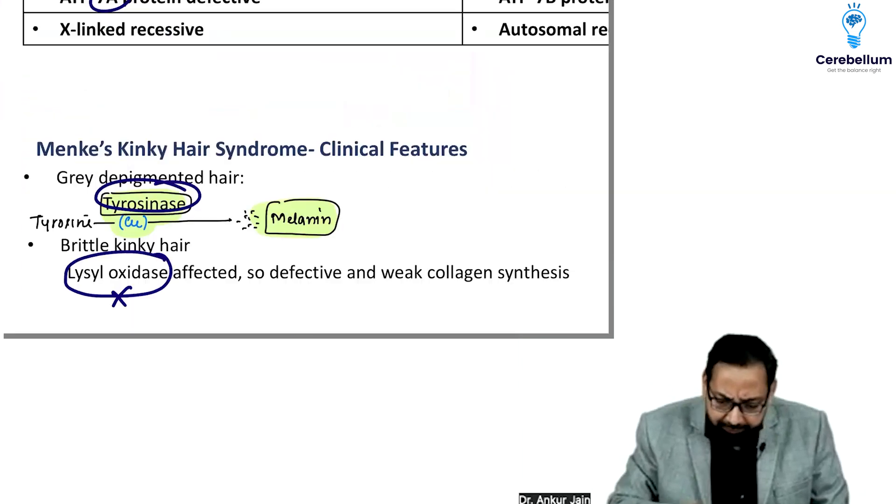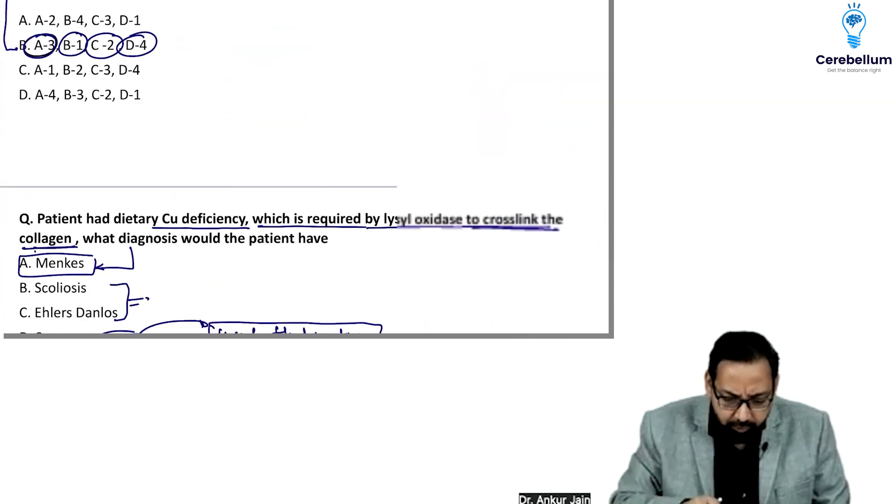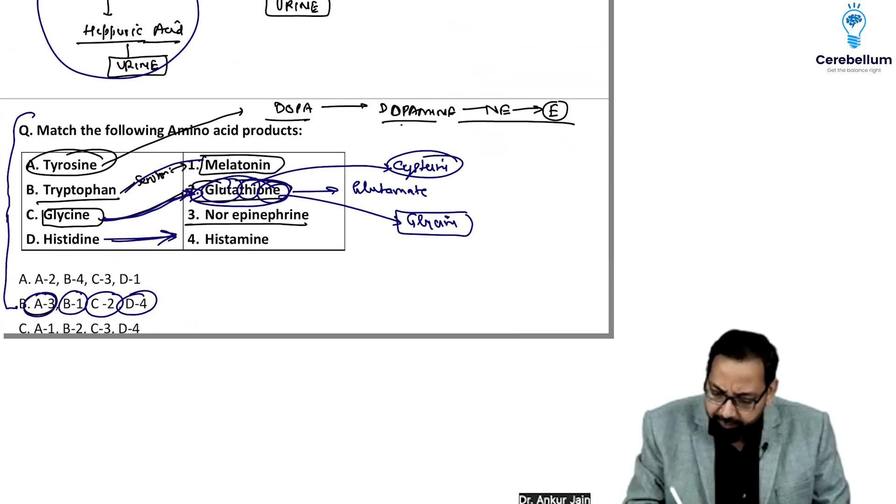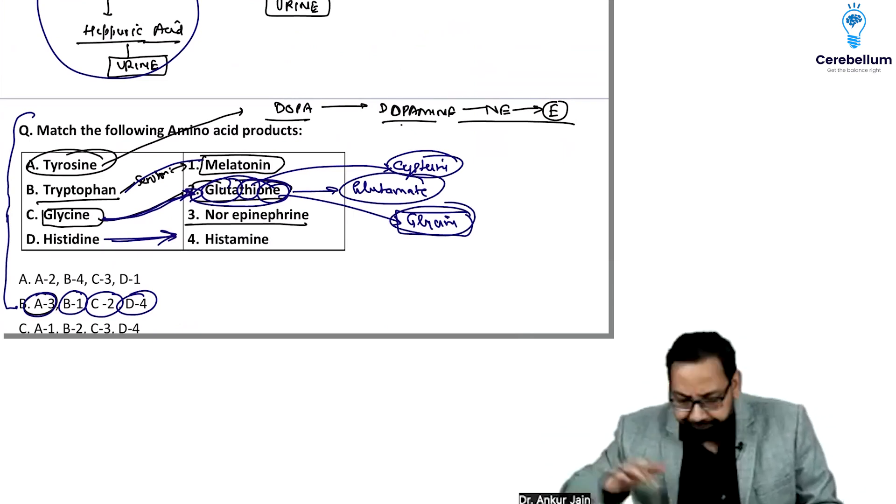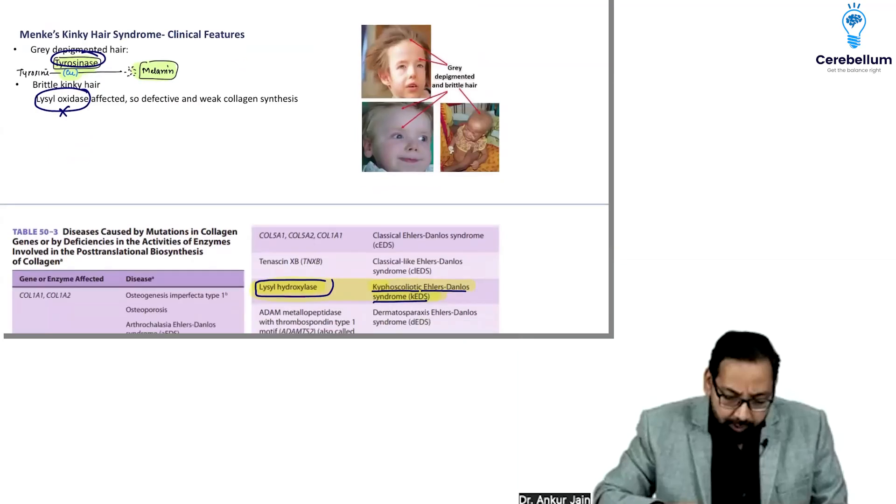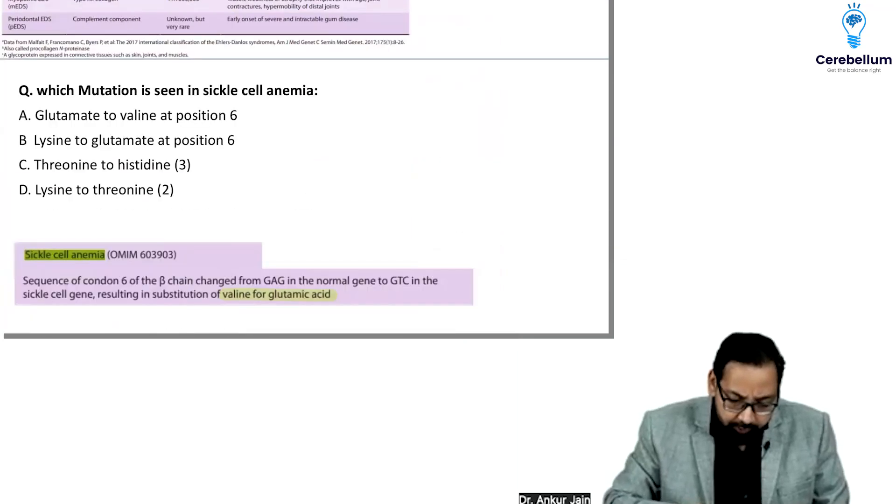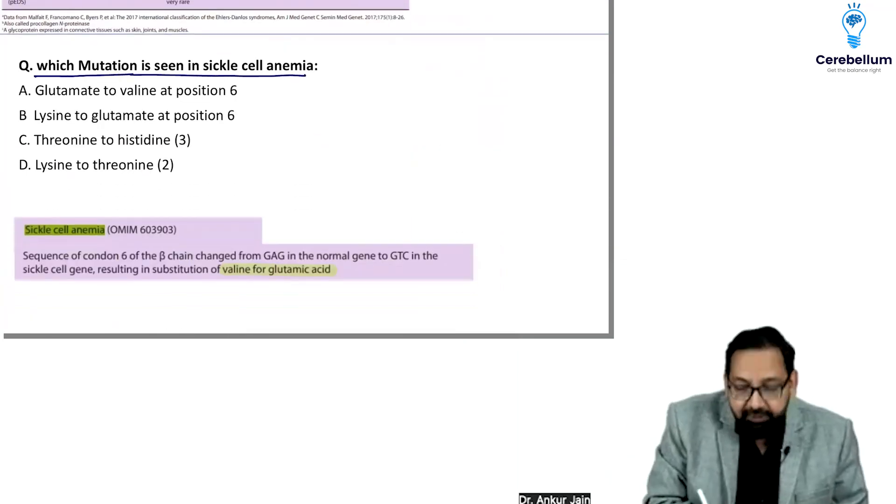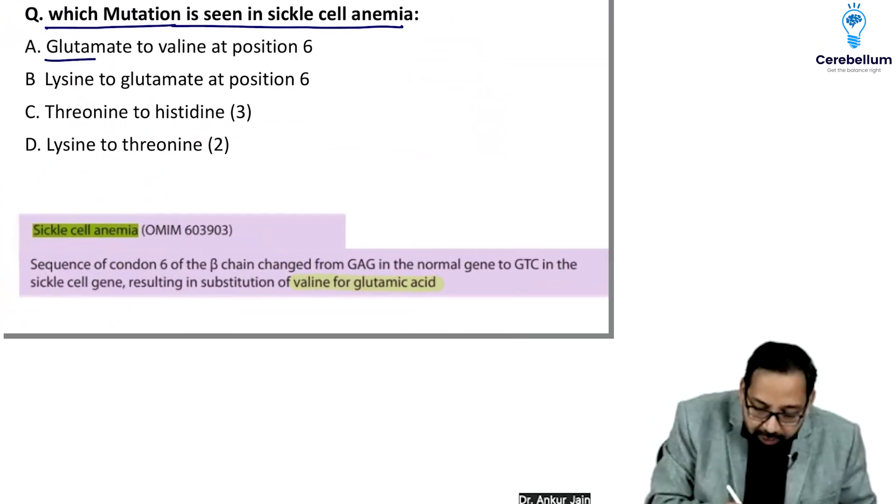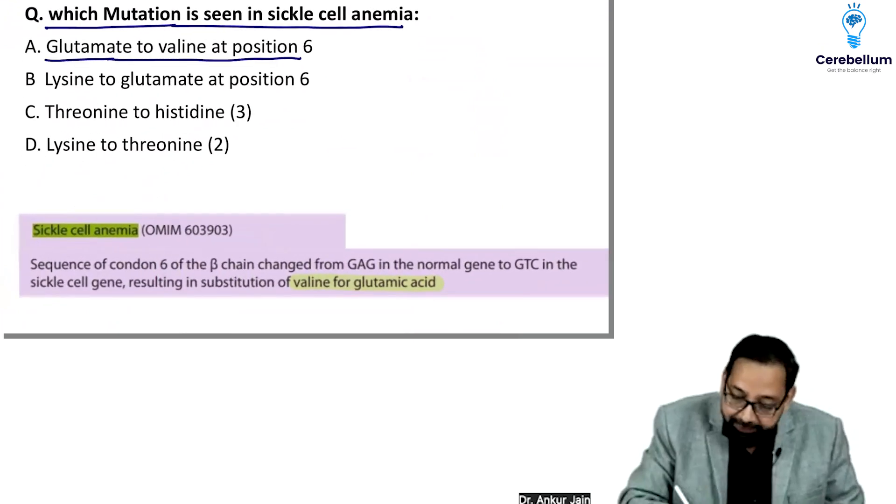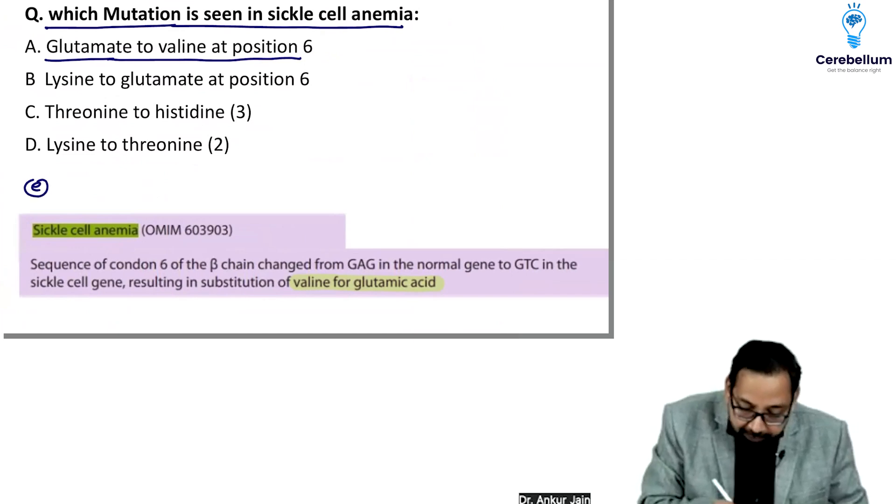Cysteine was given. Cysteine, glutamate, glycine - it is a tripeptide. Next question: which mutation is seen in sickle cell anemia? Simple, frequently asked question: glutamate to valine. Few students noted one option was valine to glutamate.